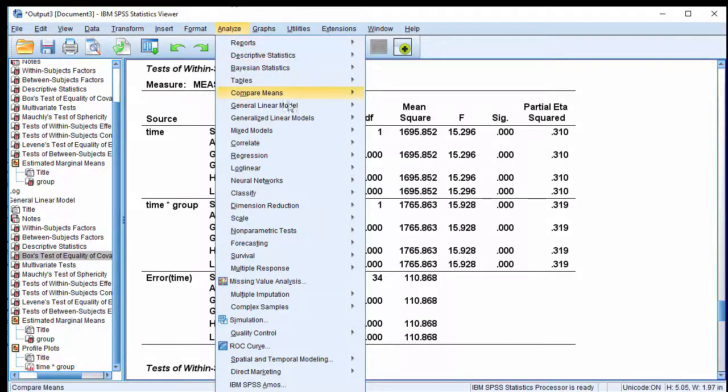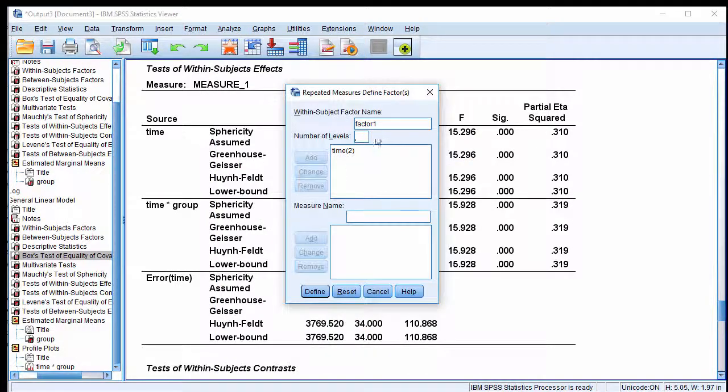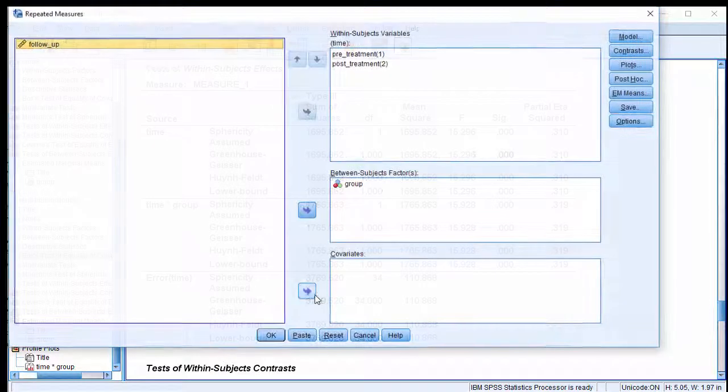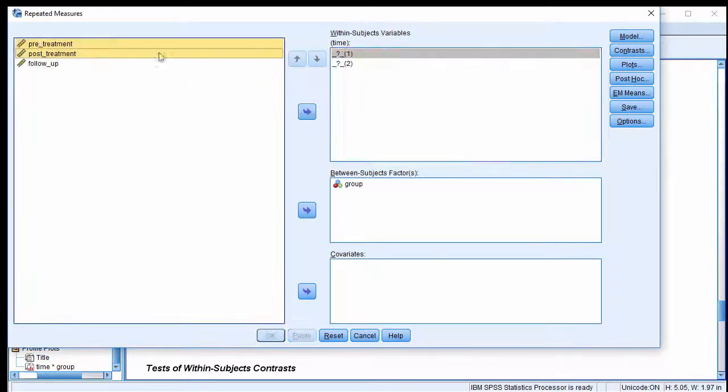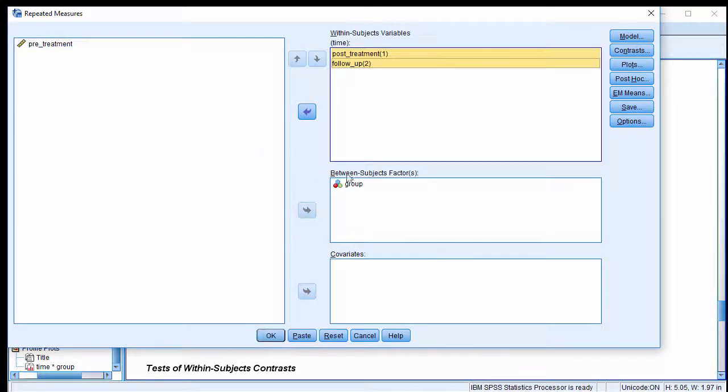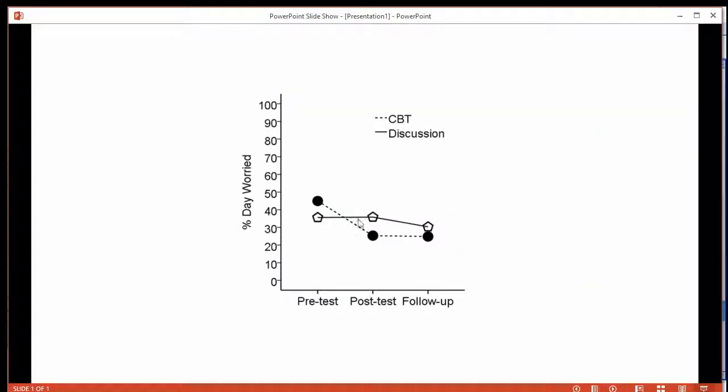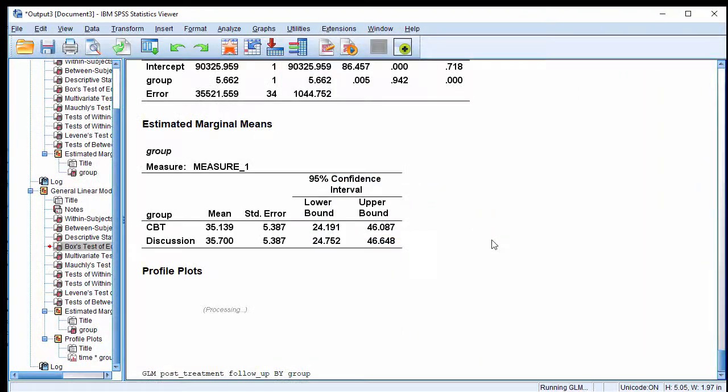Next, Analyze, General Linear Model, Repeated Measures. I want to keep two levels. Now I want to isolate post-treatment and follow-up. So put that in there. Everything else stays the same. So what I'm going to look at is the 2x2 isolating at post-test and follow-up. Click OK.